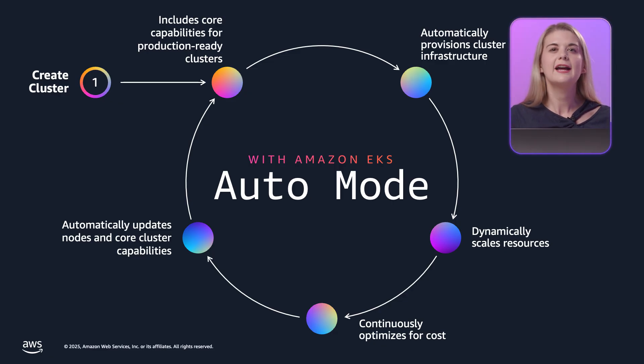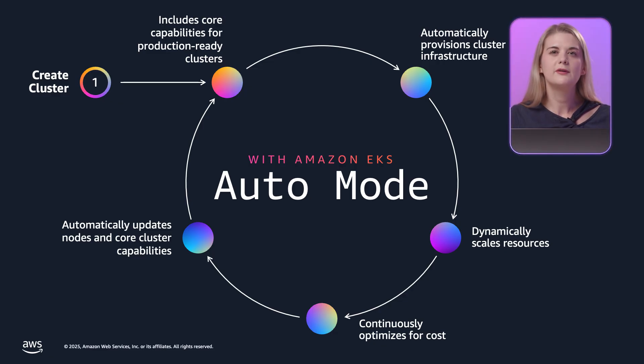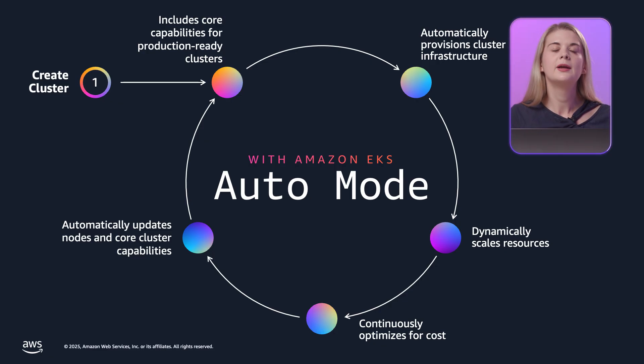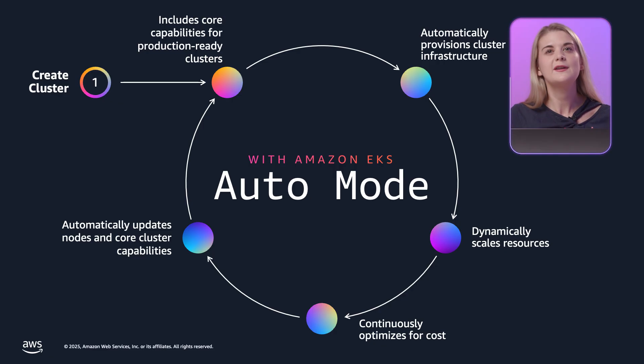Now that we have our three container images, let's think about how we're going to deploy them. With Amazon EKS Auto Mode, you can provision EKS clusters that are pre-configured with all of the storage, networking, and compute capabilities that you need to run production-grade workloads. With Auto Mode, there's no need to manually configure all of these components before you can get started with deploying your agents. You can enable Auto Mode on an existing cluster or create a new one through your preferred method. EKS Auto Mode really simplifies the work by automatically selecting and provisioning the optimal compute for your applications, dynamically scaling as your workload scales, and continuously optimizing your cluster to reduce costs — all while driving higher performance.